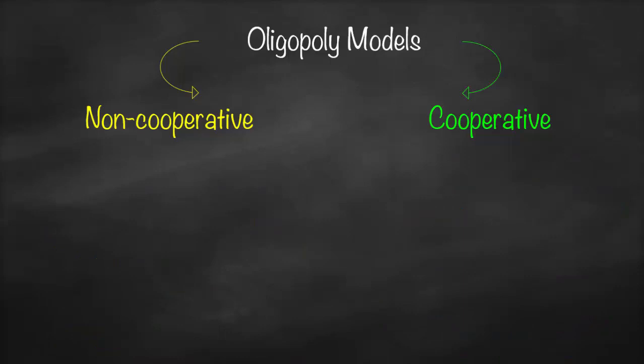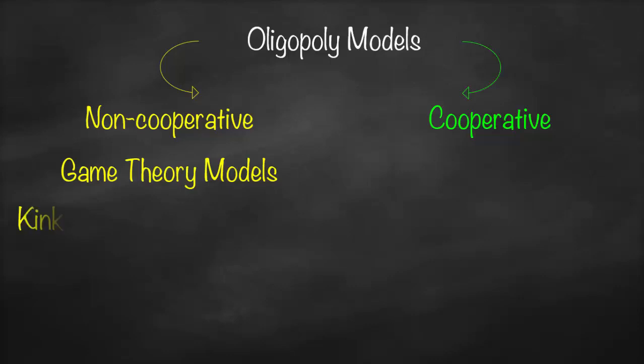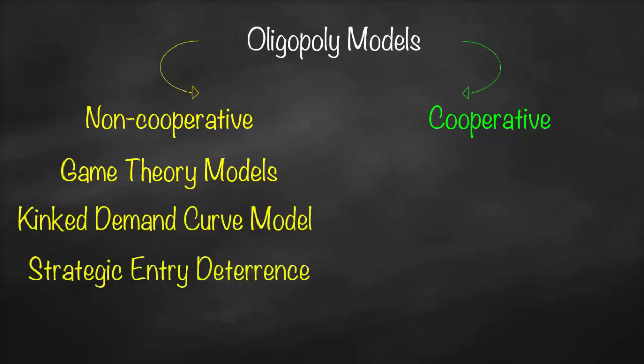We have different models under both non-cooperative and cooperative. Under non-cooperative, we have the game theory model, made very famous by John Nash and the movie A Beautiful Mind. Another model is called the Kinked Demand Curve. Another is called strategic entry deterrence, and the fourth model is predatory pricing.